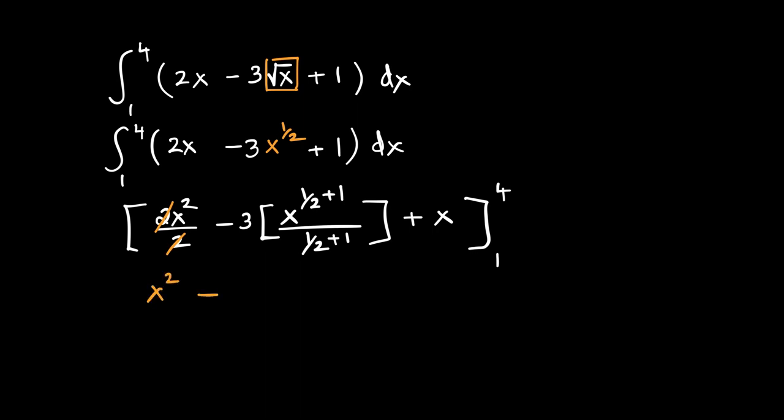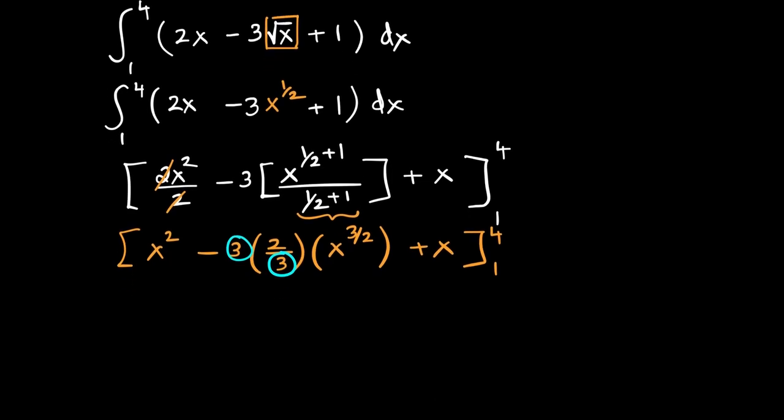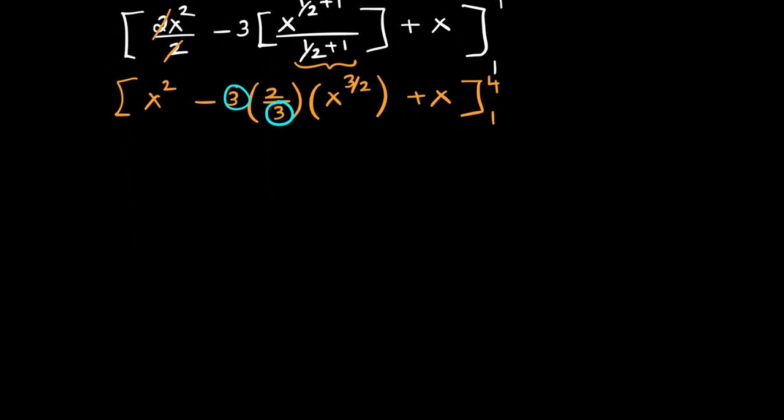So this is x square minus 3. Half plus 1 is 3 over 2. Division by 3 over 2 is multiplication by 2 third and x raised to power of 3 over 2 plus x between the same limits 1 and 4. And we are left with the following terms. So we have x square minus 2 x raised to power of 3 over 2 plus x between the limits 1 and 4.